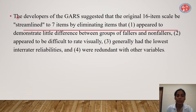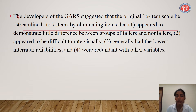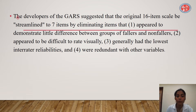The developers of GARS suggest that the original 16-item scale be streamlined to 7 items by eliminating items that appeared to demonstrate little difference between the group of fallers and non-fallers, were difficult to rate visually, generally had the lowest inter-rater reliability, or were redundant with other variables.